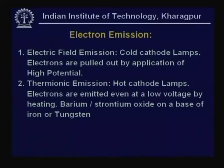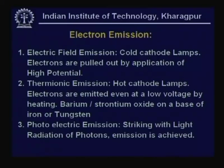As opposed to cold cathode, we have hot cathode lamps, which use thermionic emission — electrons emitted even at low voltage by heating. These cathodes are made of barium or strontium oxide on a base of iron or tungsten. So we have cold cathode lamps requiring high potential and hot cathode lamps using thermionic emission that can operate at reasonably lower voltages. There is also a third process: photoelectric emission, where photons striking the cathode cause electron emission.